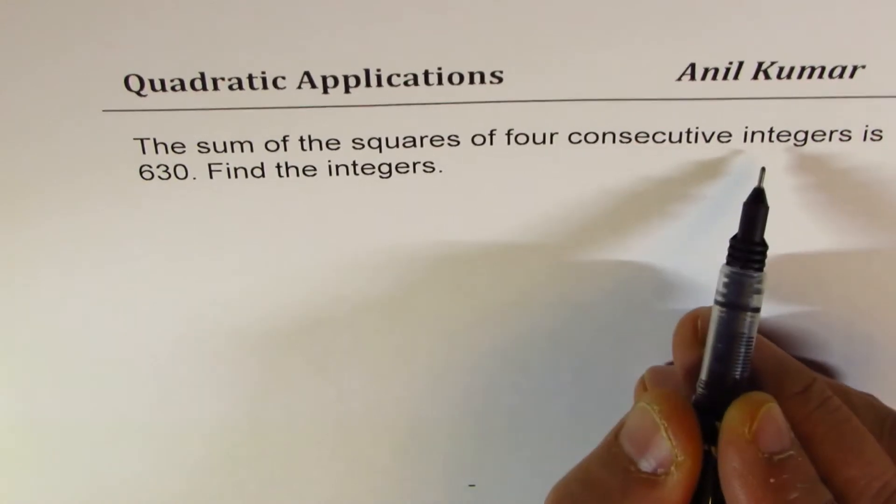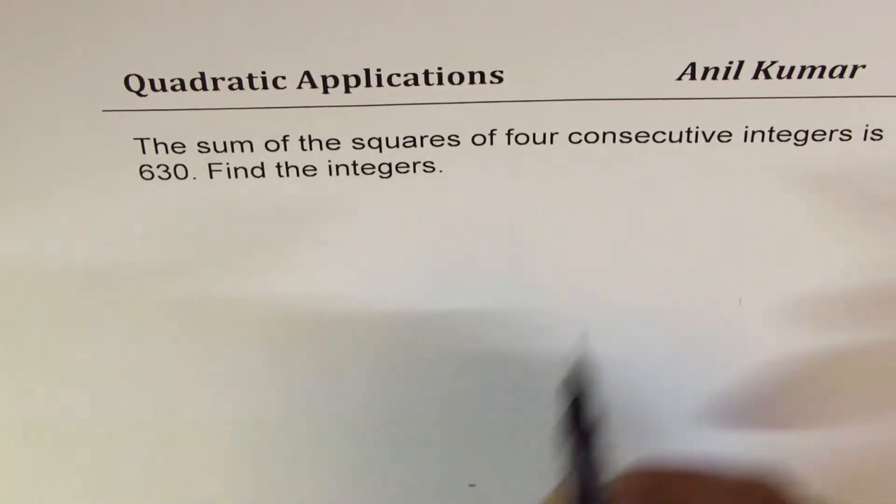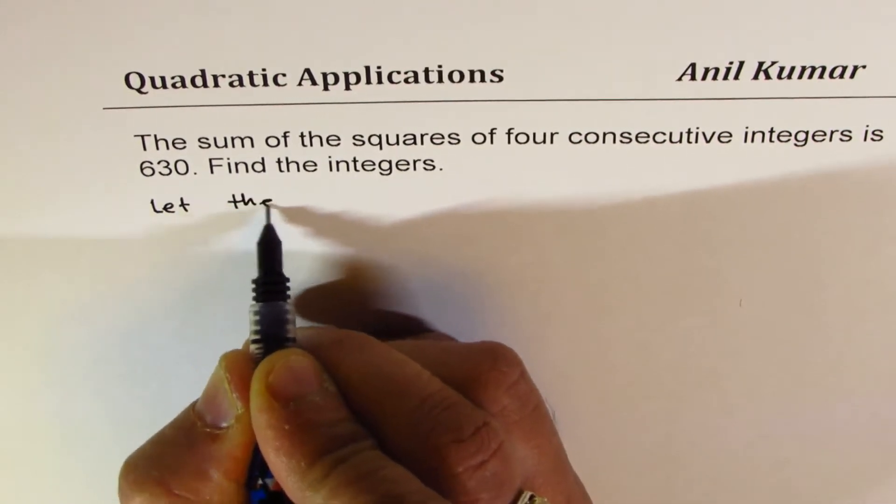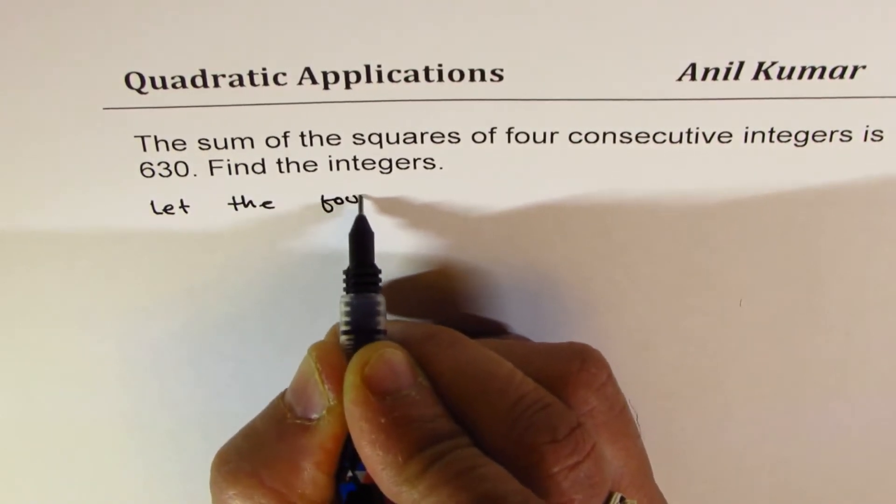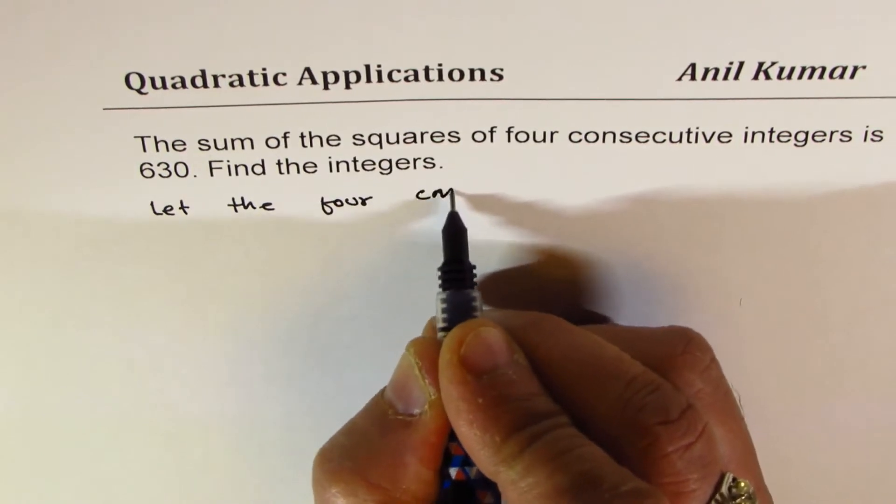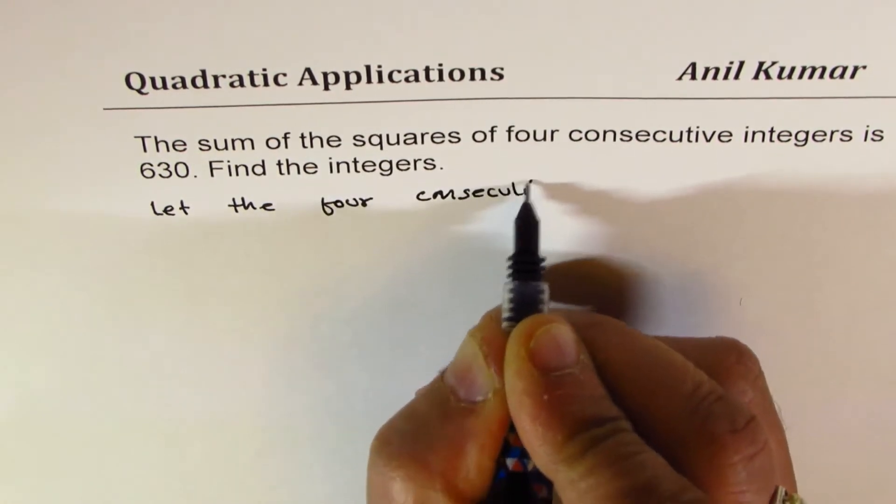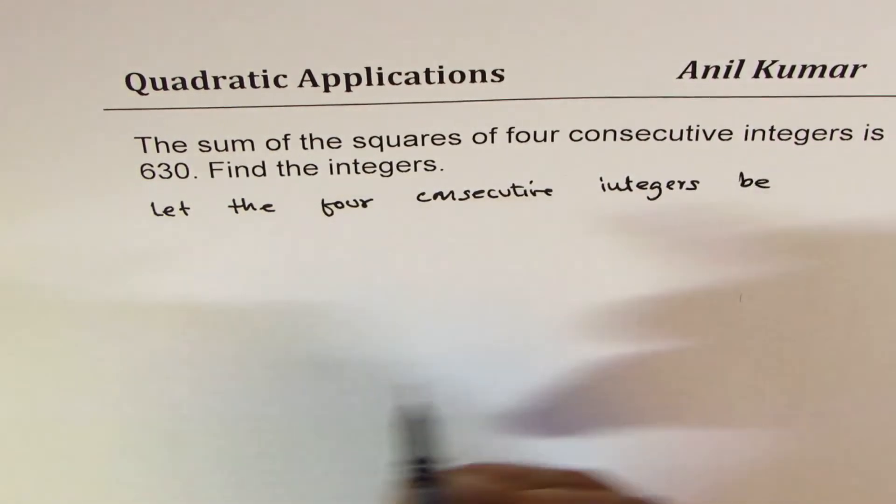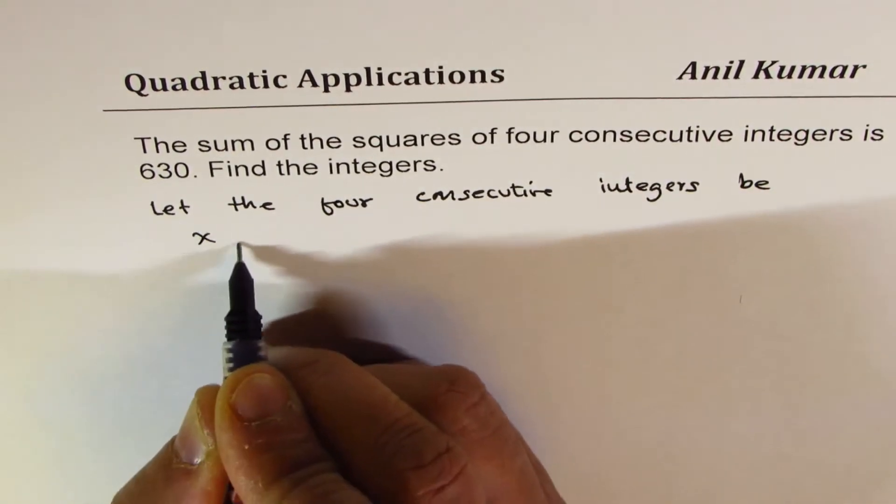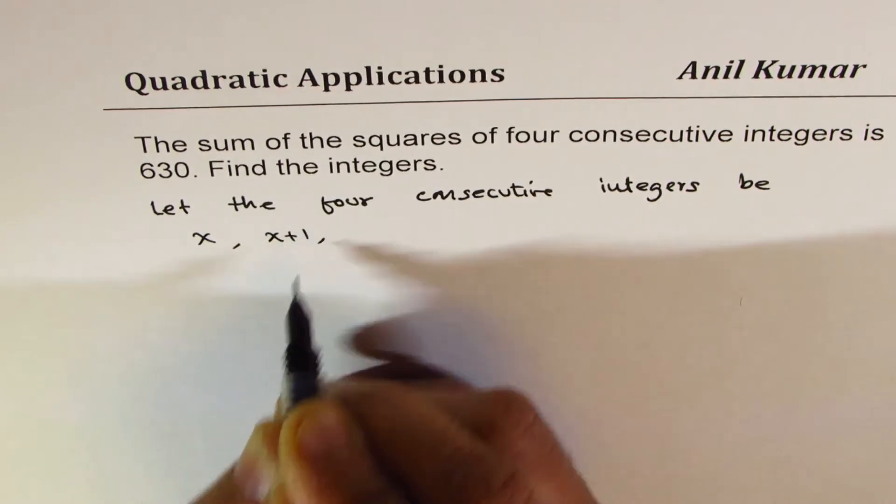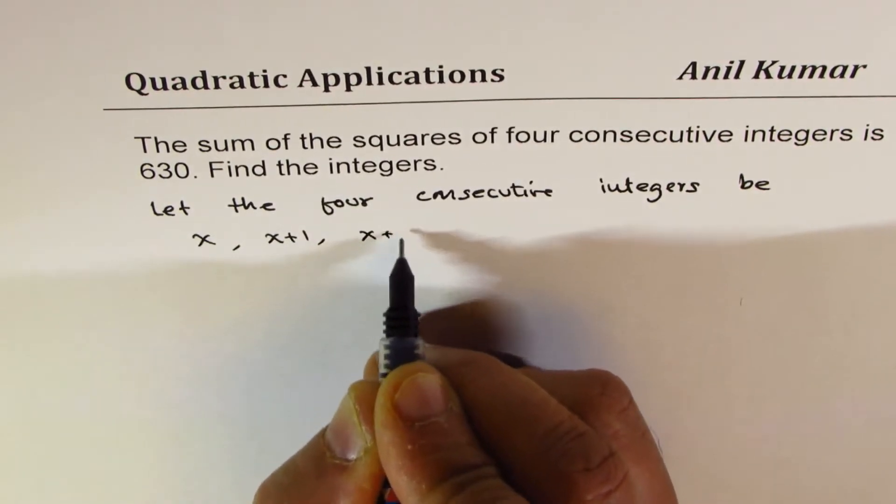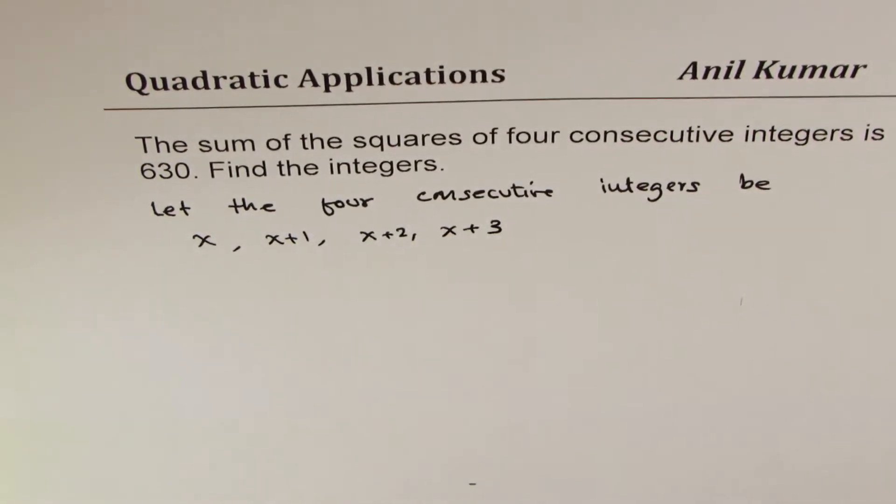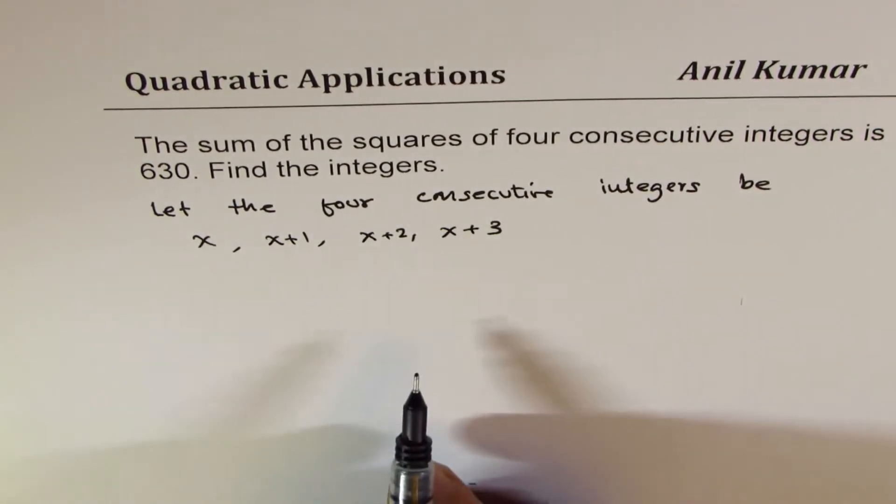Consecutive integers means the numbers which come one after the other. So let the four consecutive integers be this x. If x is the first one, then x plus 1 will be the next, x plus 2 will be after that, and x plus 3 will be after that. So these four will be consecutive integers.